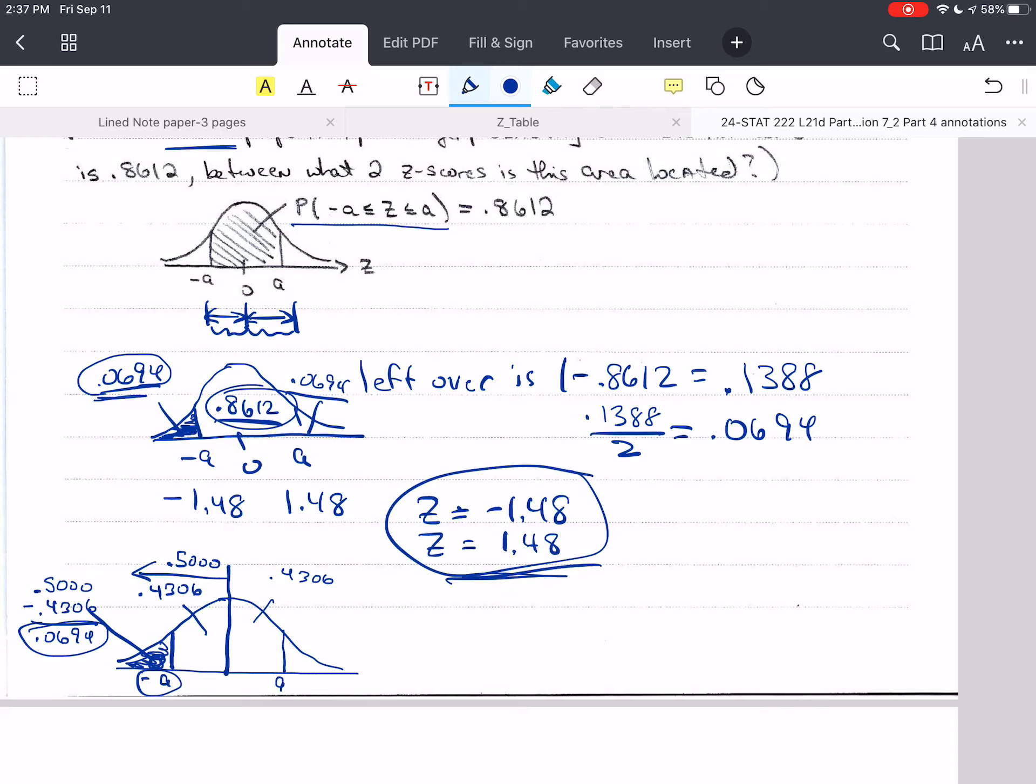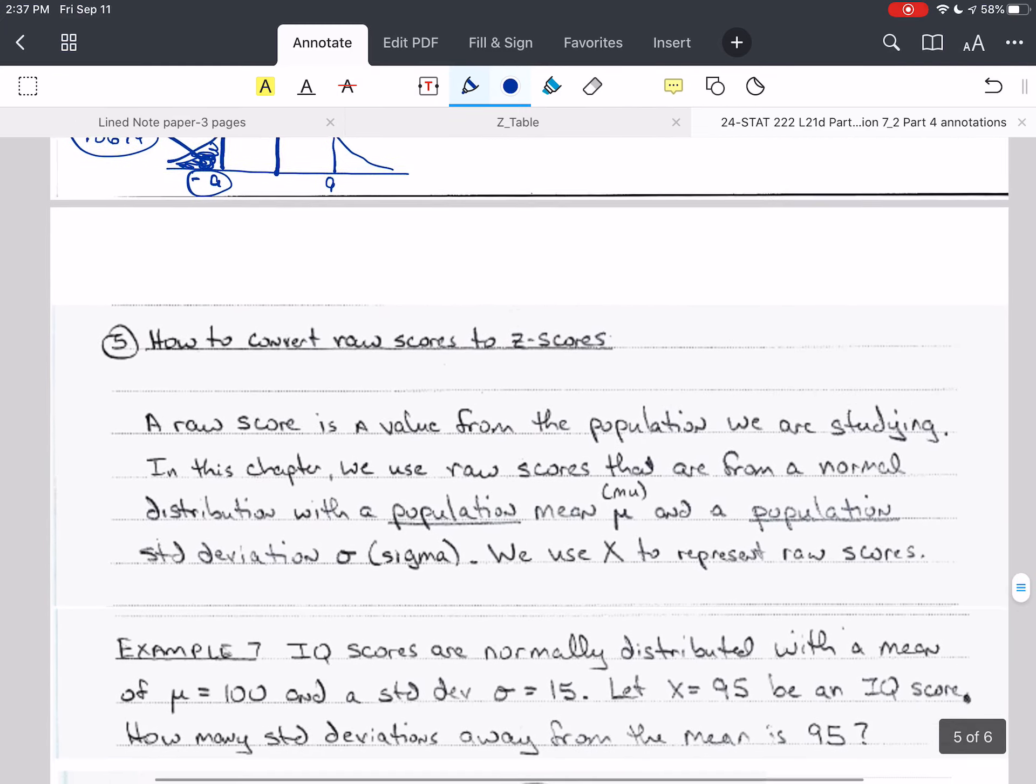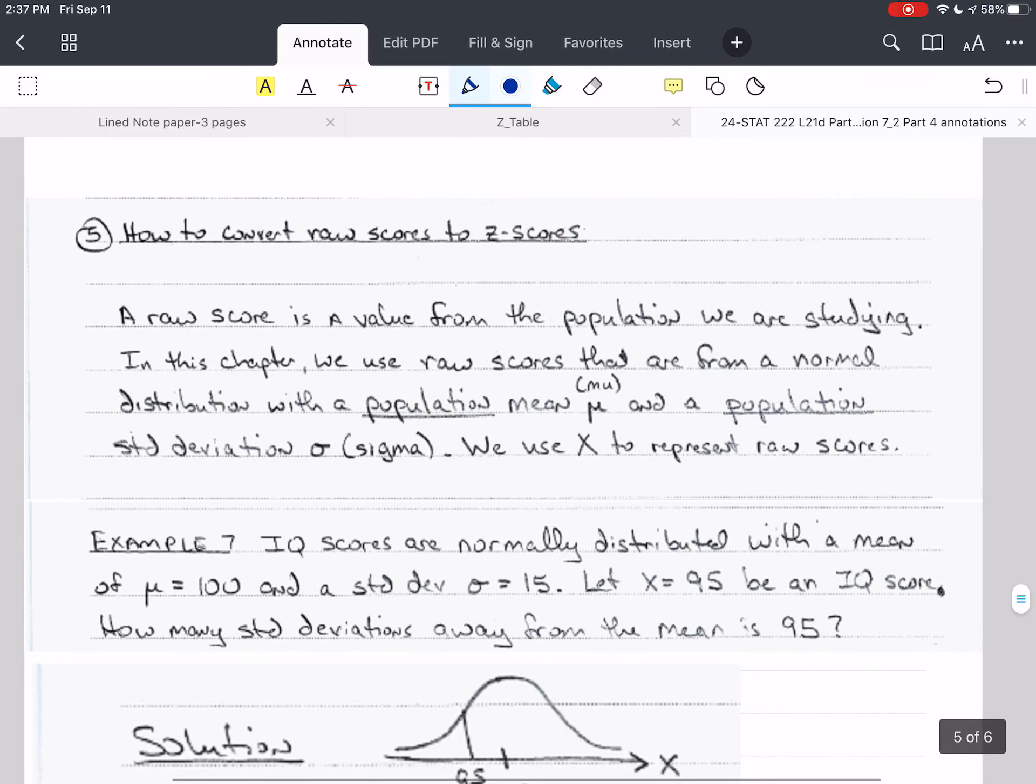So that concludes how we get z-scores when we're given probabilities. So let's prepare ourselves for the next section. We want to talk about how to convert raw scores to z-scores.